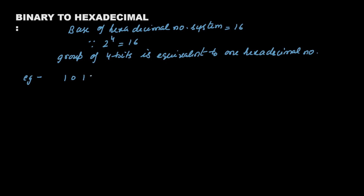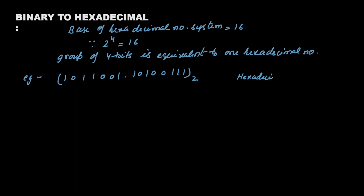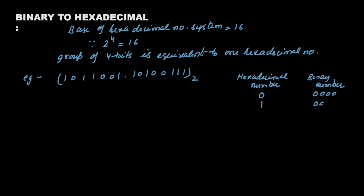Let the binary number be 1011 1010.1011 to the base 2. Just as we did for octal, we can make a table with hexadecimal numbers and their 4-bit binary equivalents — writing each hexadecimal digit in four bits — to help convert this number easily.